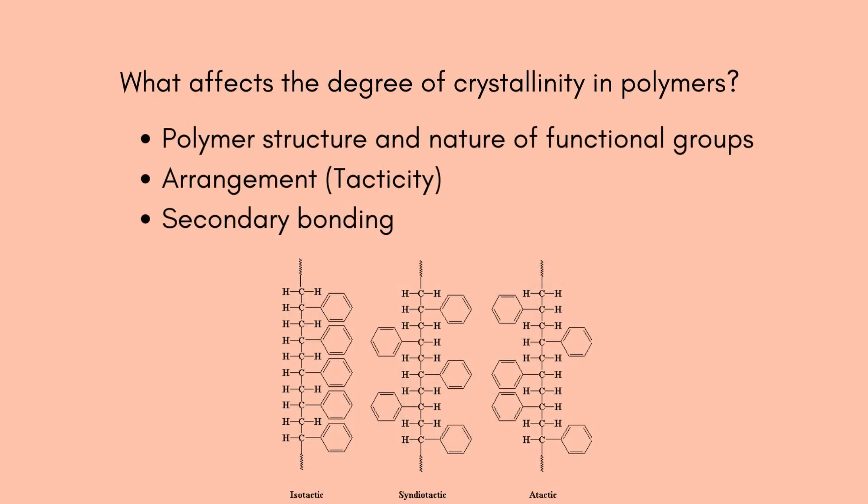What affects the degree of crystallinity in polymers? First, it is the polymer structure and nature of functional groups. Crystallinity in polymers is governed by the extent of chain ordering or chain folding. If the side groups of the polymer backbone are large and heavy, chain movement and folding is hindered, which reduces the probability of forming crystalline domains.